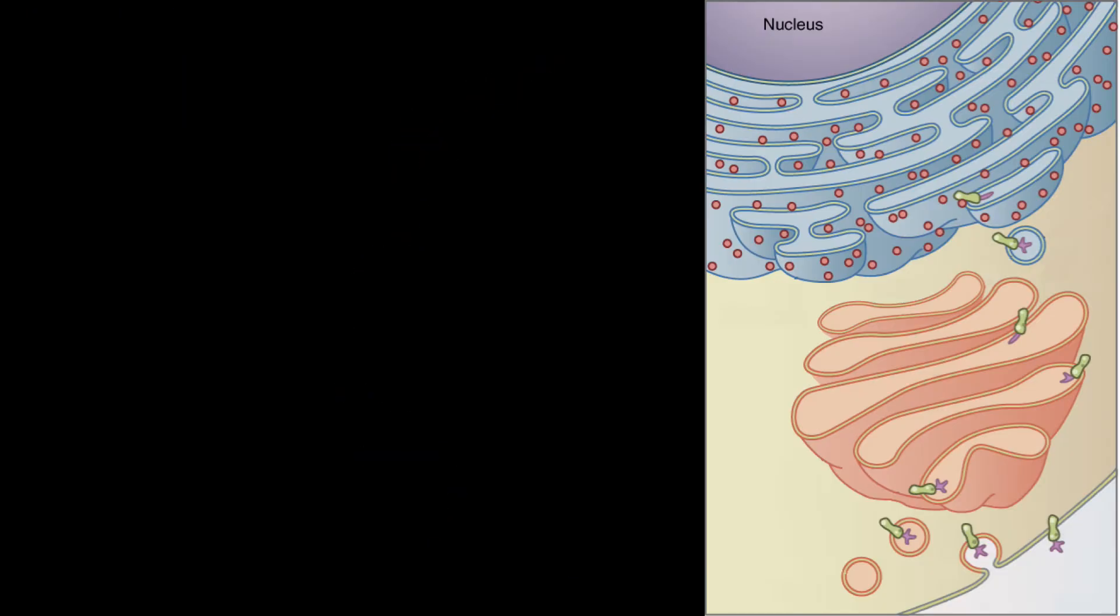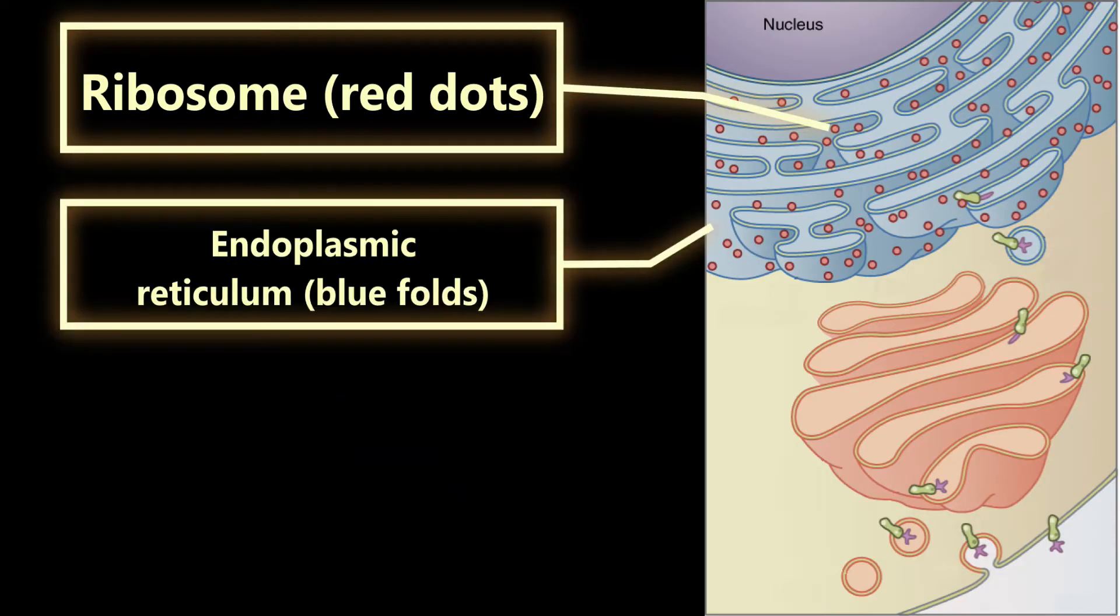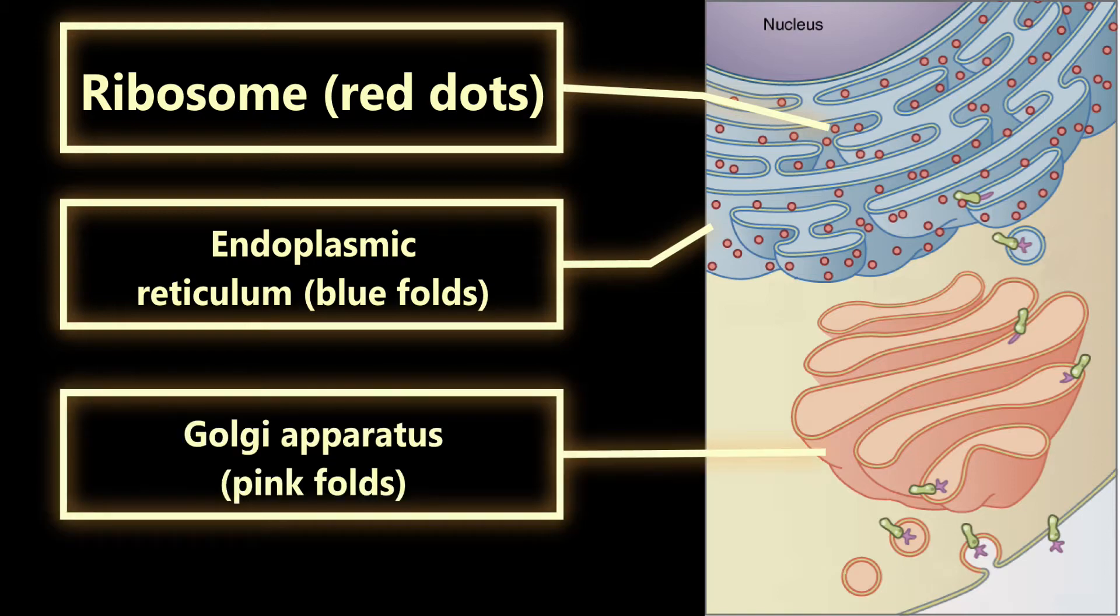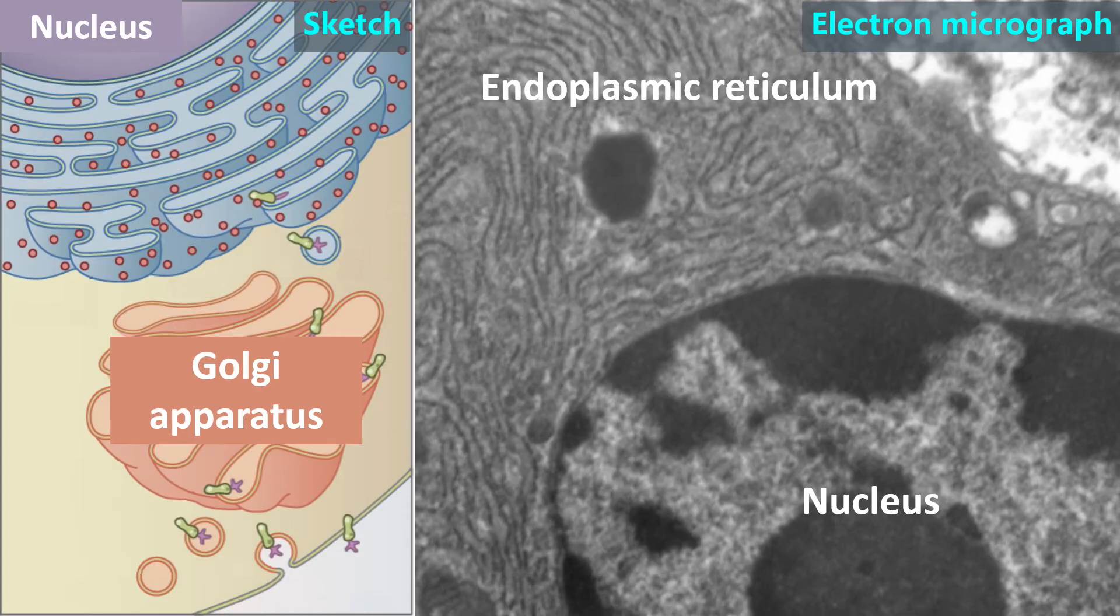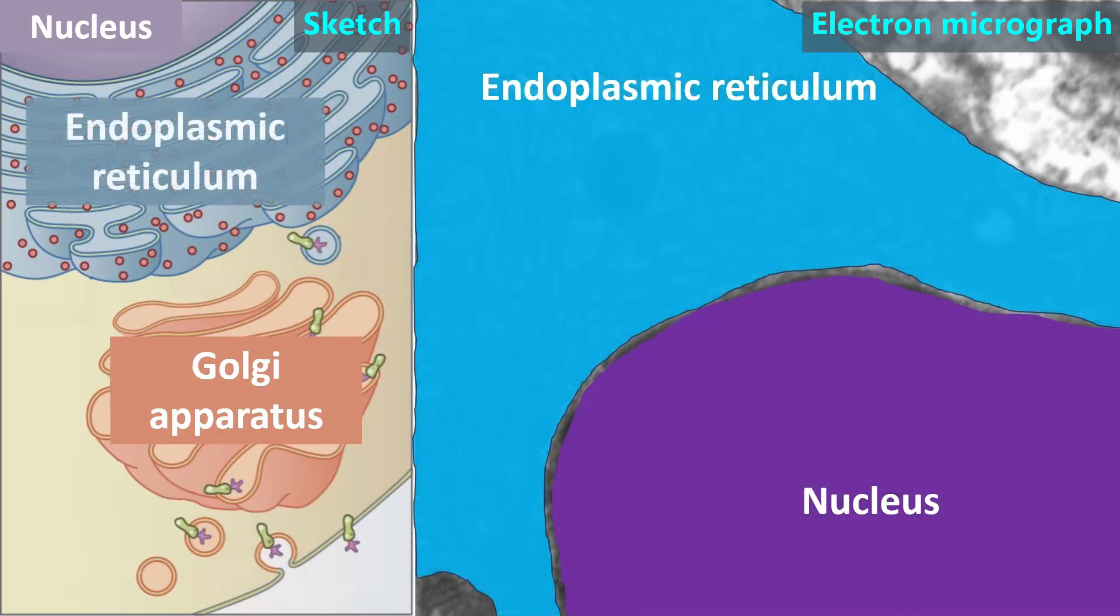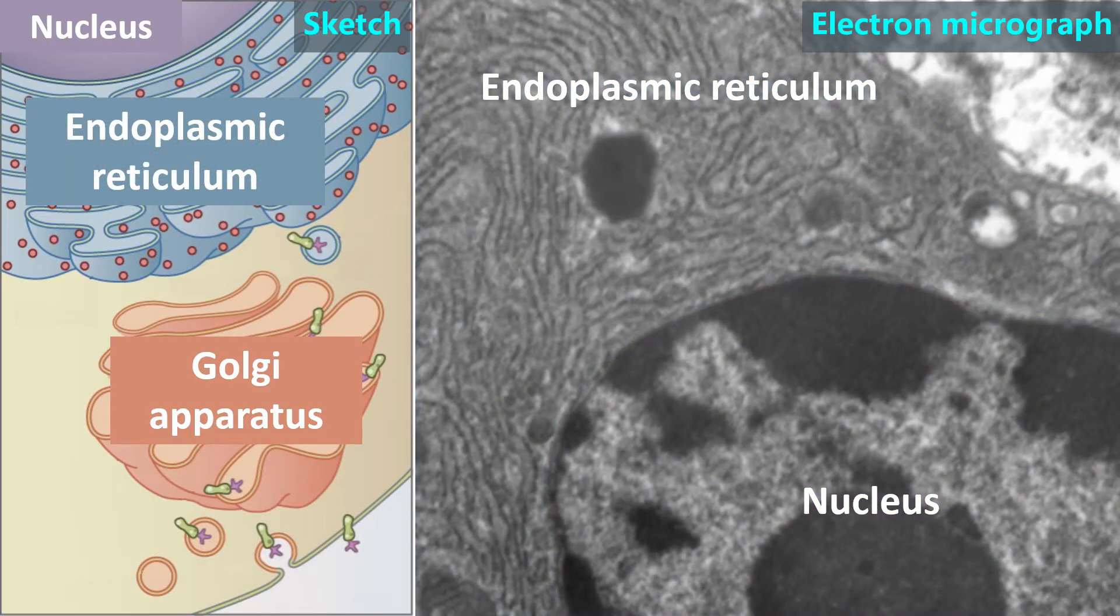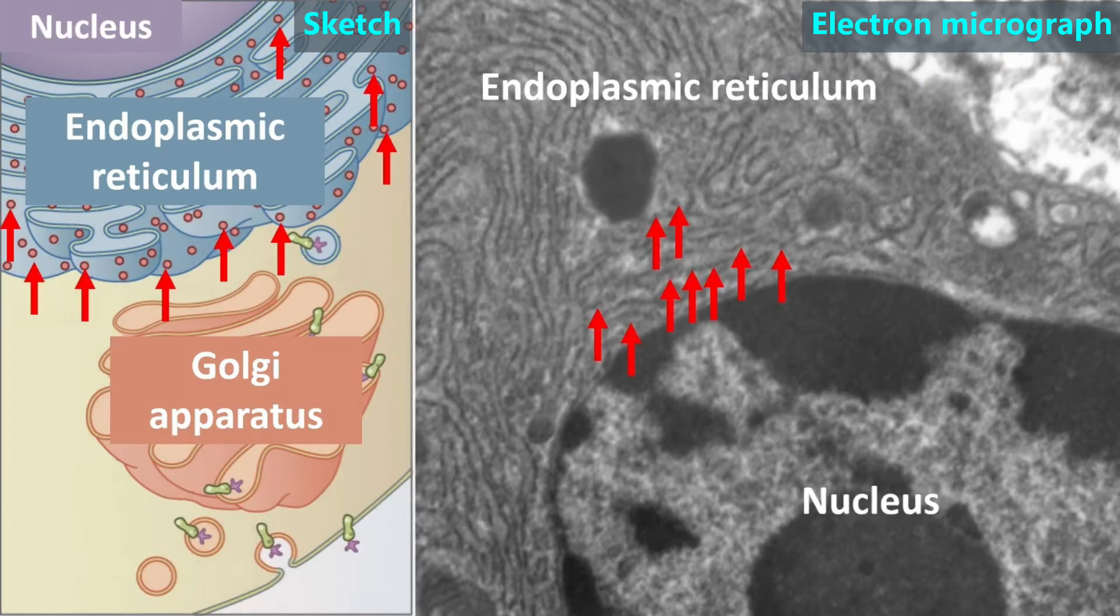The organelles used to make and transport proteins are the ribosomes, the endoplasmic reticulum, and the Golgi apparatus. In this image, we can see the nucleus and endoplasmic reticulum are next to each other. There are many tiny dots scattered over the endoplasmic reticulum, of which we have put arrows next to just a few. Those dots are ribosomes.